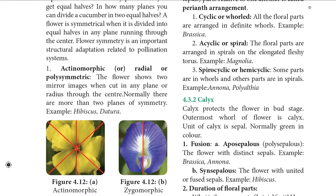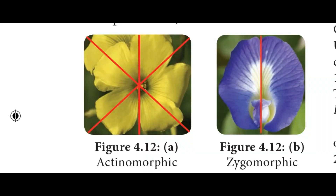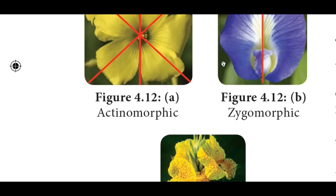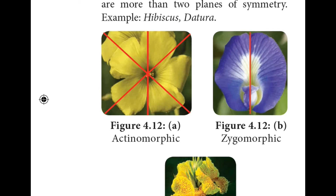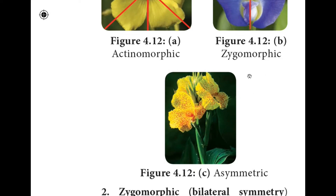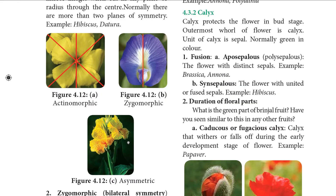Flower symmetry: A flower is symmetrical when it can be divided into two equal halves at any plane through its center. Actinomorphic flowers show a mirror image when cut in any plane through the center — two or more planes of symmetry. Example: Hibiscus. Zygomorphic flowers can be divided into two equal halves only in one plane. Example: Pea and bean. Some flowers are asymmetric and cannot be divided into equal halves in any plane because the floral parts are twisted. Example: Canna indica.